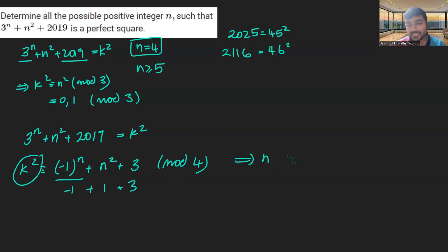So this tells us that n is even. And so if n is even, well, this thing here becomes 1. This is 0. This is 3. 1 plus 0 plus 3 is 4, which is the same as 0 mod 4, which also therefore implies that k is even.